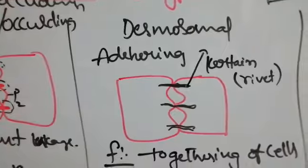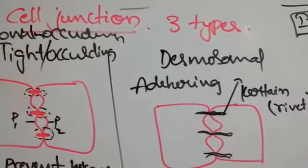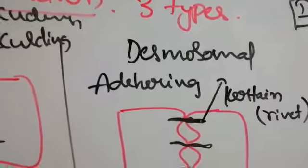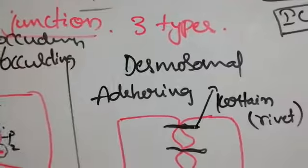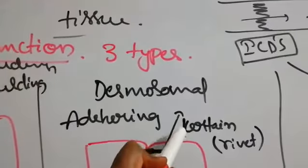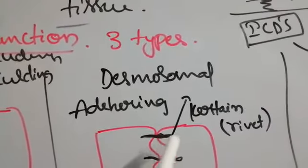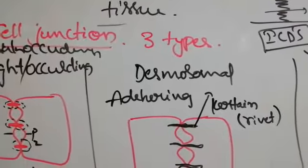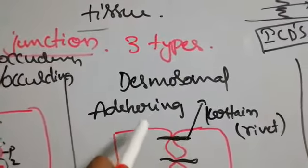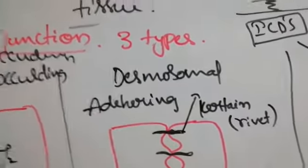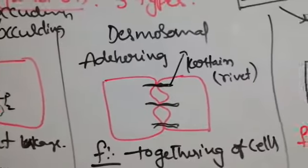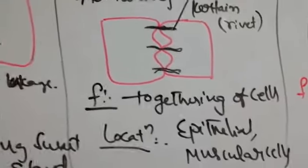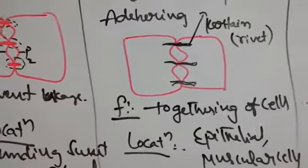The desmosomal junction is also called the adhering junction or anchorage junction. Here, the plasma membranes of two cells are combined with a special protein called keratin, forming a rivet bolt-like structure called the desmosome — that is why it is called the desmosomal junction. The function is keeping cells adhered together, and it is located at epithelial and muscular cells.